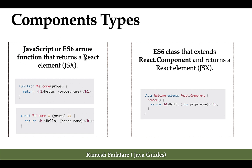Let's summarize the component types. A functional component is created using a JavaScript function or ES6 arrow function that returns a React element. A class component is created using an ES6 class, must extend the Component class from React, and uses a render method to return the JSX code.